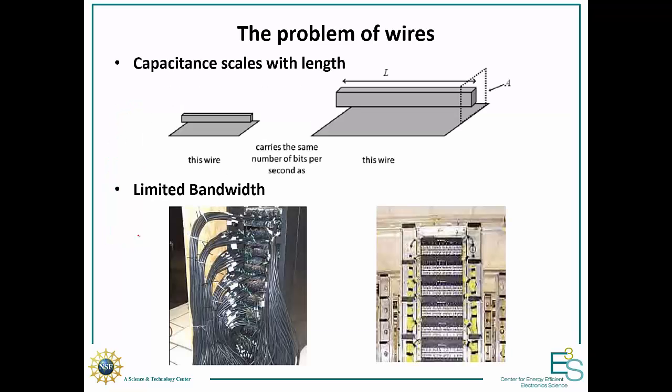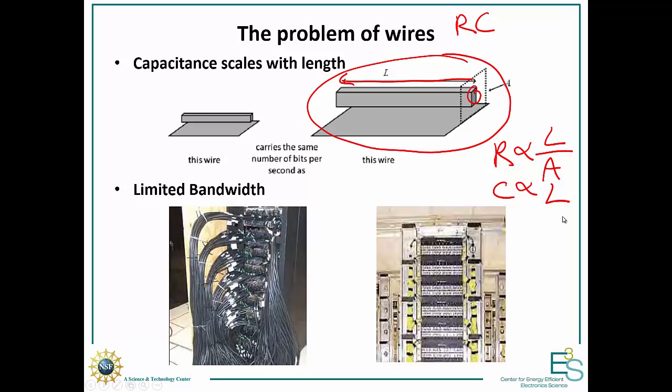So what's the problem with wires? Why do we want to switch to optical interconnects? Now if you look at a wire like this one, its bandwidth is going to be limited. The resistance scales like L over A, the ratio of the length over the cross section, whereas the capacitance is going to scale roughly with L. So when you do the product of those, the RC product is going to scale as L squared over A.